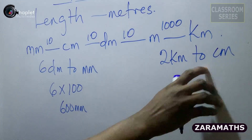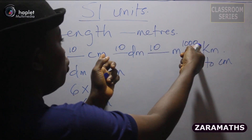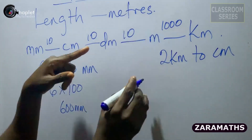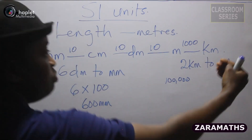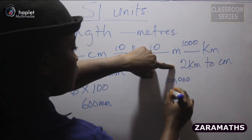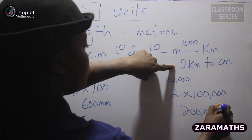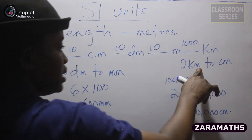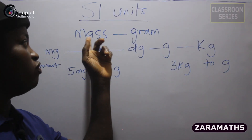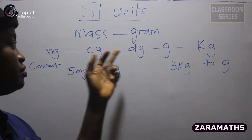We're also going to convert 2 kilometers to centimeters. From kilometer to centimeter, the steps are 10 × 10 × 10 × 10 × 10, multiplied together to give 100,000. Because we are moving backward to a smaller unit, we multiply: 2 by 100,000, which is 200,000 centimeters. So 2 kilometers is 200,000 centimeters. The base unit of mass is grams.